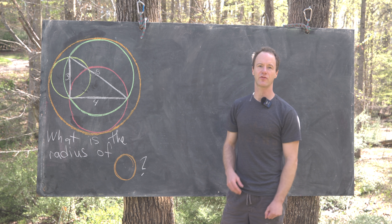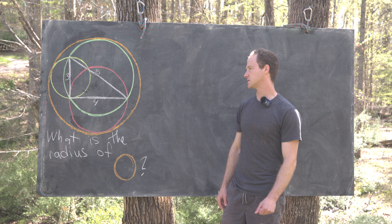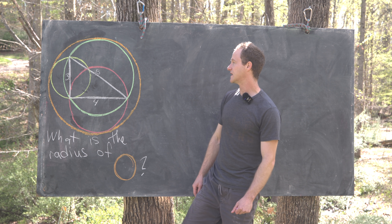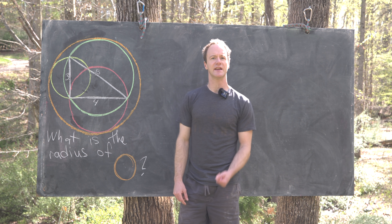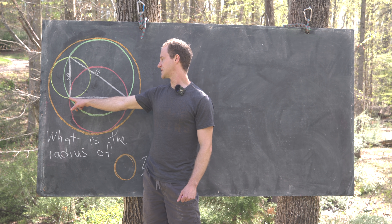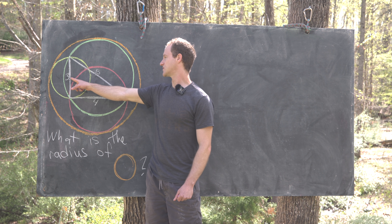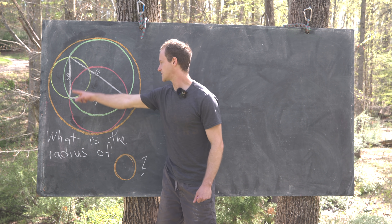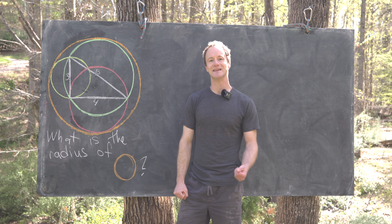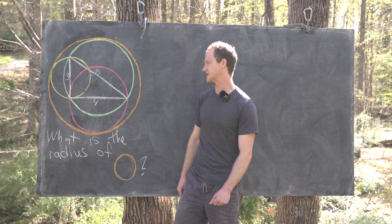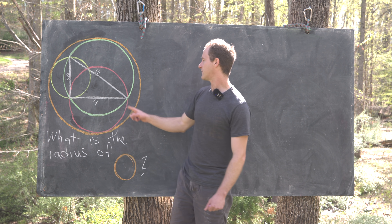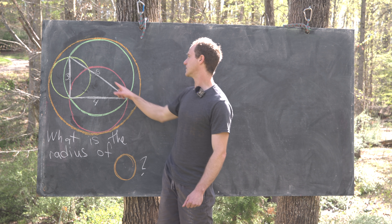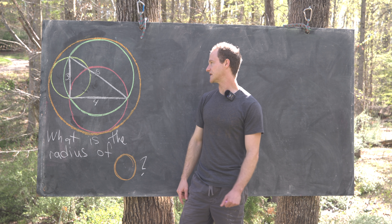We're going to look at a geometry problem involving a 3-4-5 right triangle and four different circles. Attached to the triangle are three circles: a yellow circle with radius 3/2, centered at the midpoint of the side of length 3; a red circle with radius 2, centered at the midpoint of the side of length 4; and a light green circle with radius 5/2, centered at the midpoint of the hypotenuse.